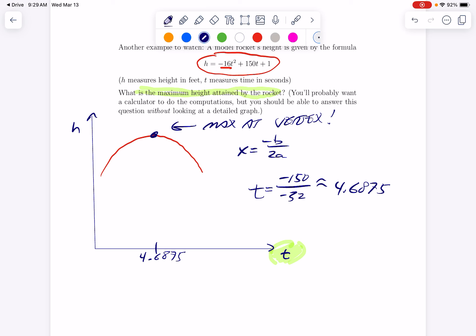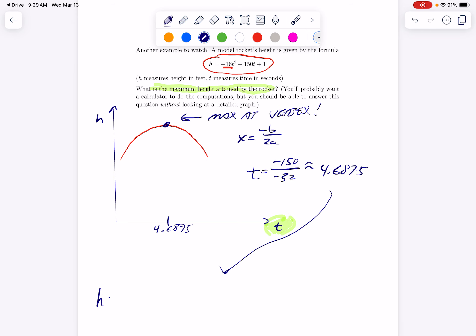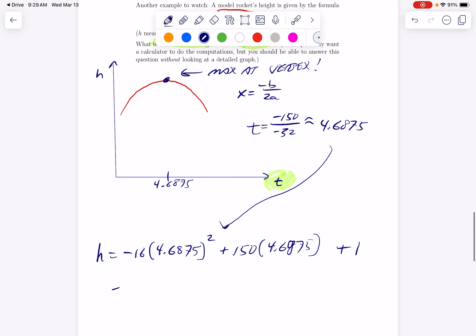So height would be negative 16 times this value of t plugged in. Obviously, we're going to use a calculator plus 150 times this number plugged in for t plus one. And I will do this. I may set myself up to do this video without my regular calculator with me. So I'm doing it on my phone, which is not ideal.